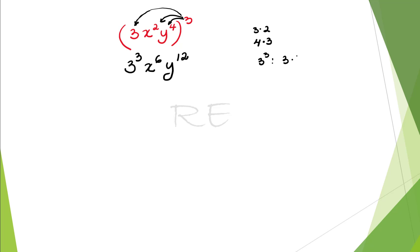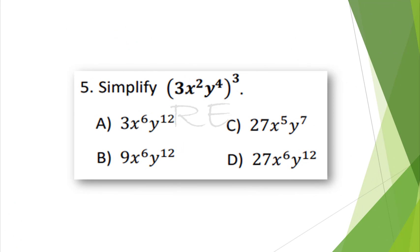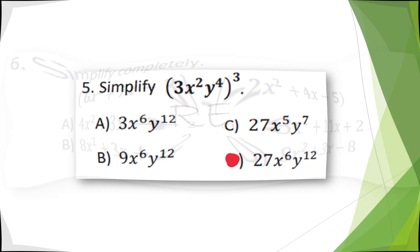Now, 3 cubed is 3 times 3 times 3. And 3 times 3 is 9 times 3. 9 times 3 is 27. The answer is 27x to the 6th y to the 12th. The correct answer is D.